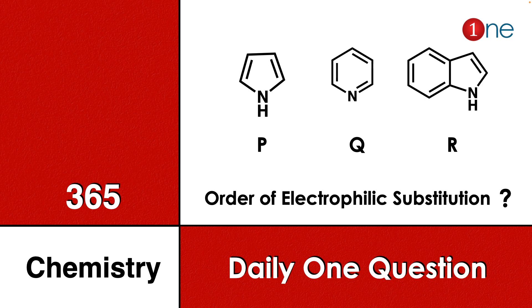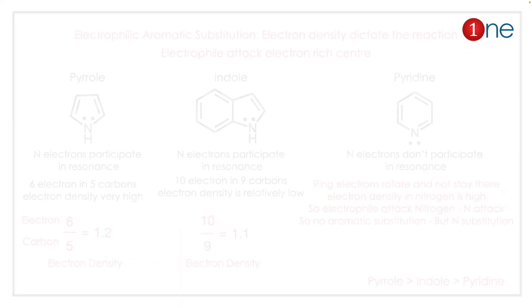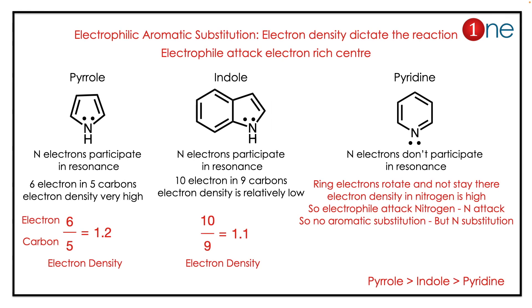You have to find the rate of electrophilic aromatic substitution. The electrophilic aromatic substitution happens based on electron density — the electrophile attacks regions of high electron density. So we have to count what the electron density will be in these three systems.